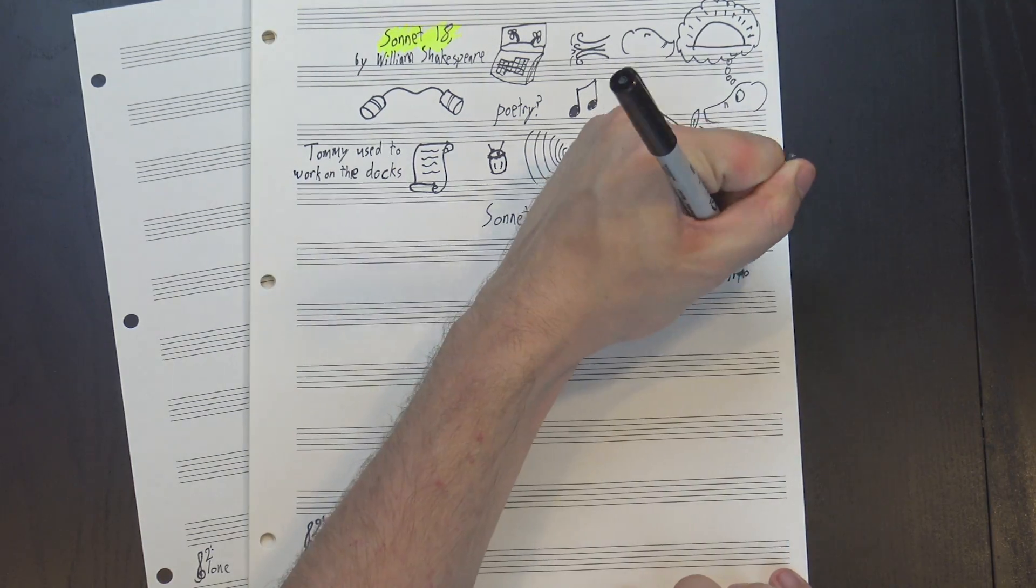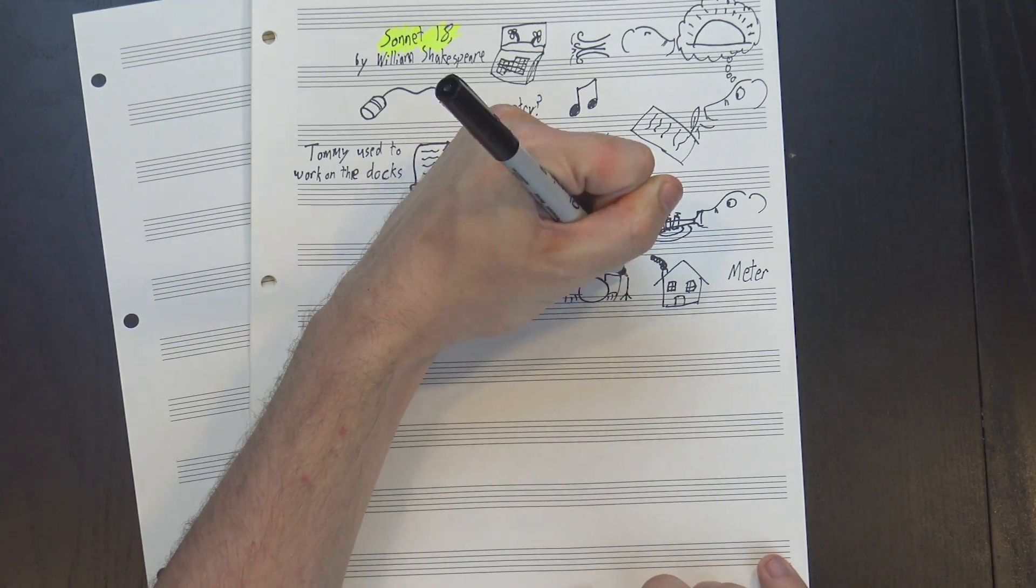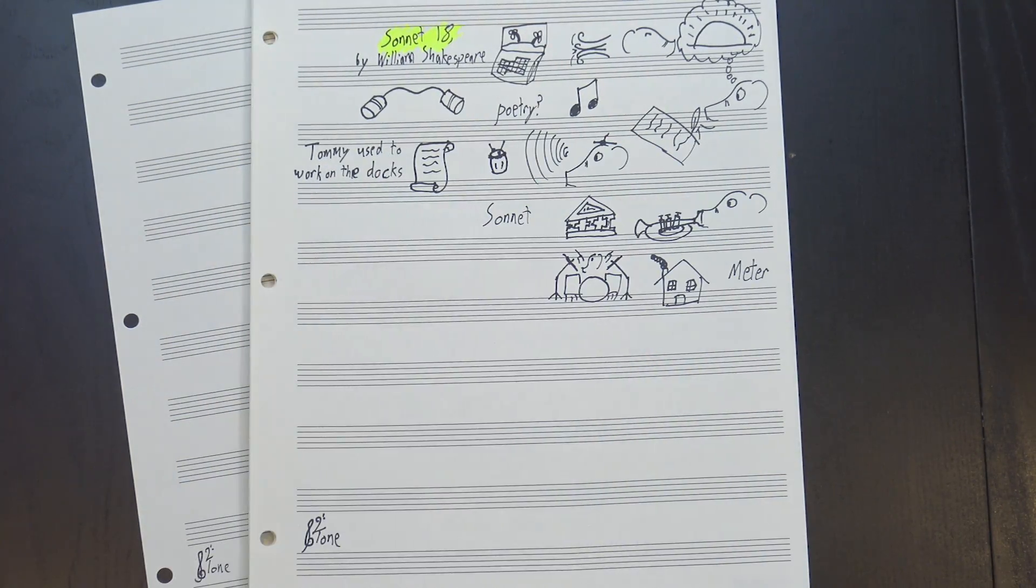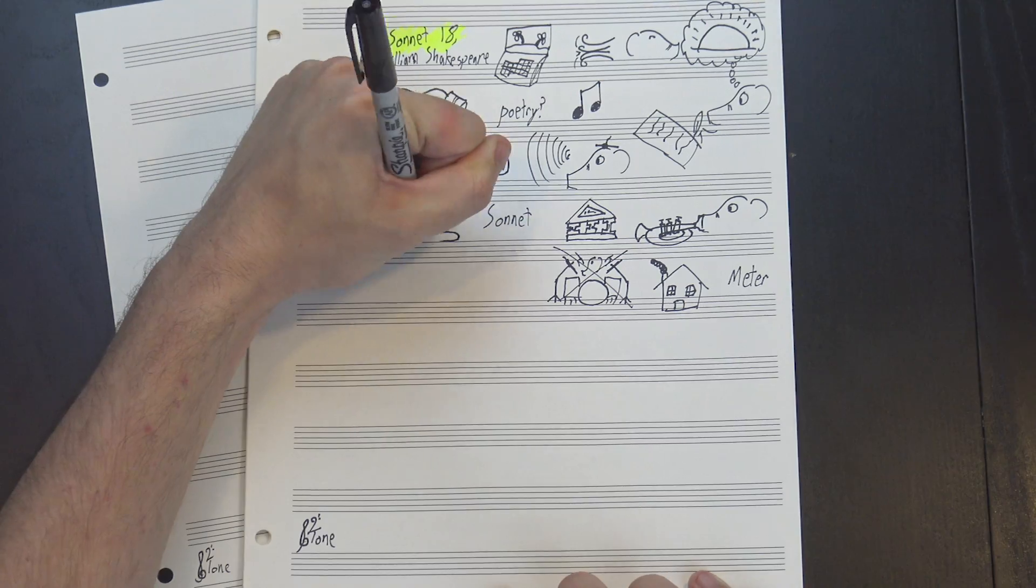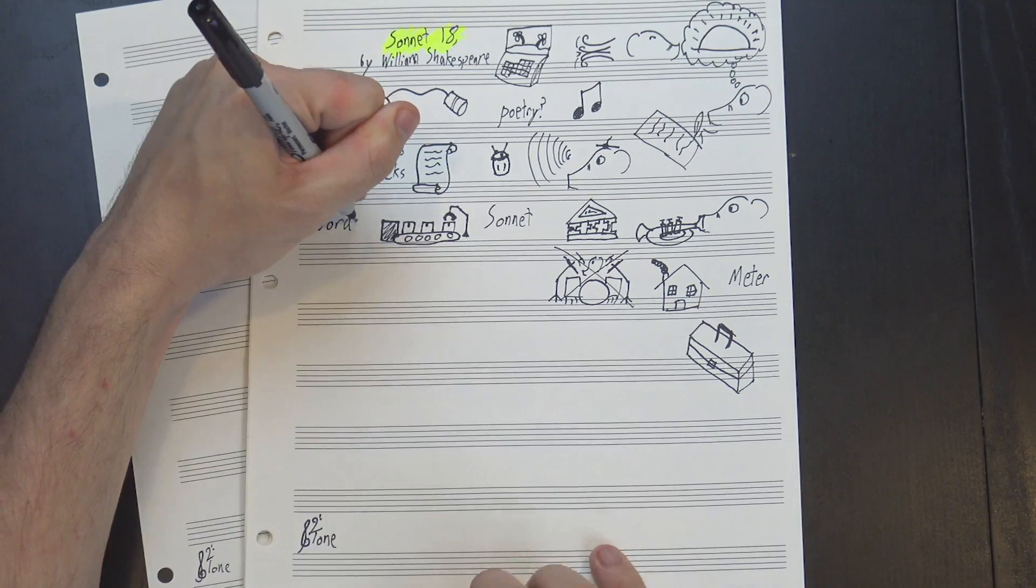The first thing we need to consider here is the meter. This is the underlying pulse that everything is built on top of. In music this is easy, because someone is usually playing that pulse, but poetry doesn't have a backing band. If a poet wants rhythm, they have to make it themselves, and to do that they turn to the only tool they've got: words.